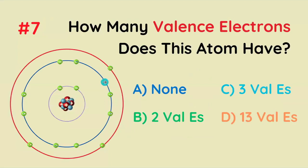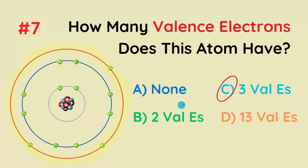How many valence electrons does this atom have? None, two, three, or thirteen valence electrons? The answer is going to be three, because it's all the electrons in the outermost shell.